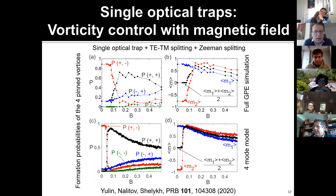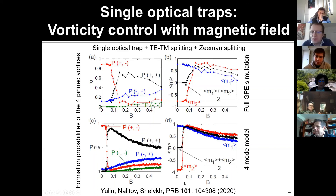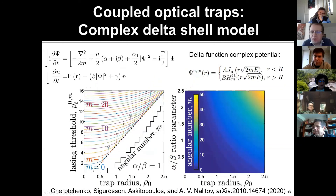This depends on the parameters. If the characteristic lambda splitting for the electron-hole pair is small compared to the binding energy, you can neglect this effect, but you need to compare the Zeeman splitting with other small parameters such as the splitting induced by trap asymmetry. Certainly there are regions in which the orbital effect of magnetic field can be neglected. Thank you, Anton — I think we now need to move on. Thank you very much, and let me introduce the last speaker.